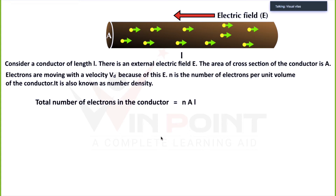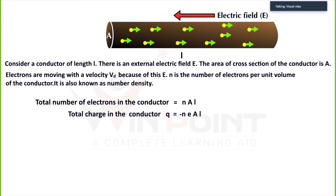Now what will be the total charge? The charge of one electron is minus e. So the total charge Q in the conductor will be minus N times e times A times L, since there are NAL electrons and the charge of each electron is minus e.